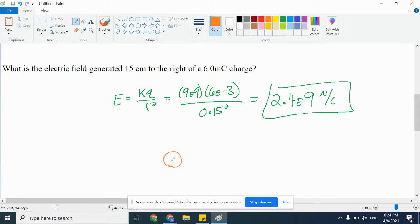So, if you think about what's happening, here is our 6 millicoulomb charge, and here is the position 15 centimeters away. If I placed a positive charge here, it would be repelled, so the field is directed to the right.